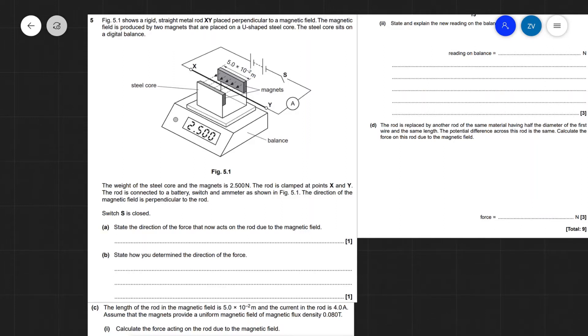Getting back to the question: the weight of the steel core and the magnet is 2.500 newtons. You can see that there's quite a lot of precision given in this reading, and the rod is clamped at points x and y. The whole thing is connected to a battery, switch, and an ammeter. We have this little circuit over here that is going to have current flowing from x to y.